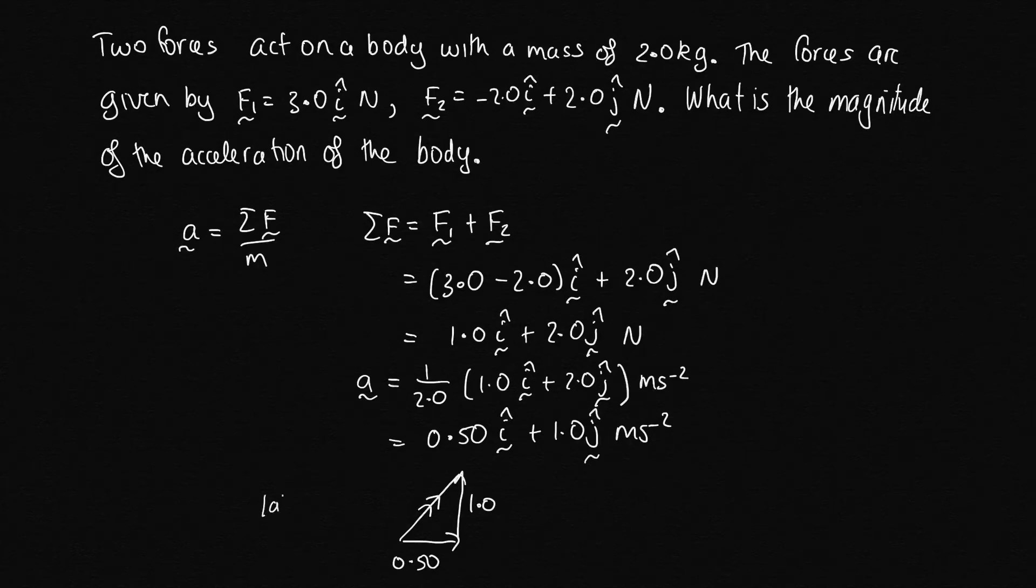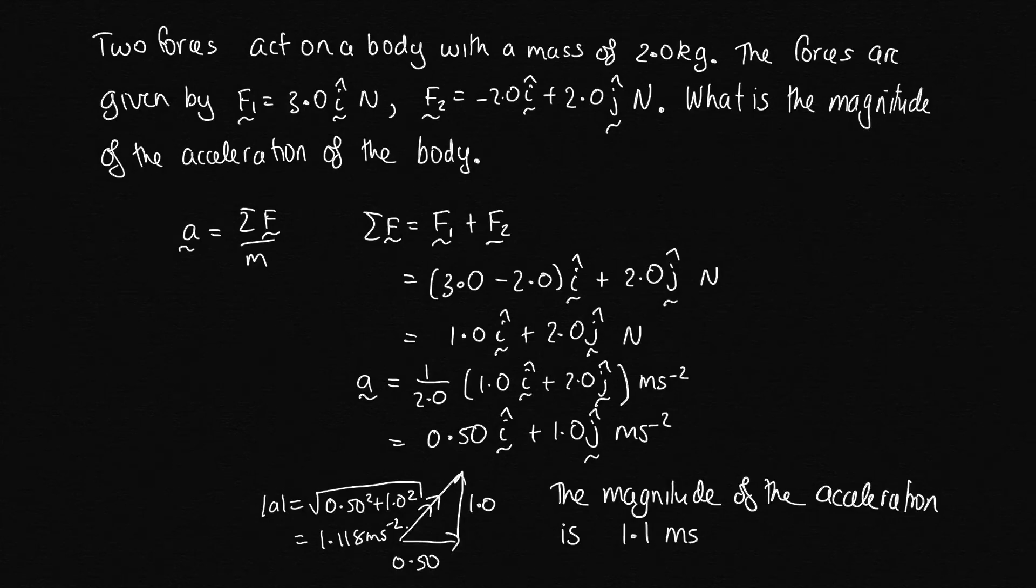So the magnitude of the acceleration is equal to the square root of 0.50 squared plus 1.0 squared. Solving this on the calculator, we get 1.118 meters per second per second. So we should just present it to two significant figures as everything's given to two significant figures. So the magnitude of the acceleration is 1.1 meters per second per second.